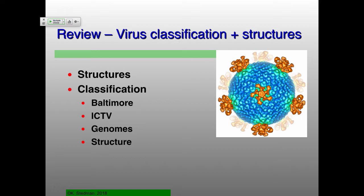Genomes are probably a much better way to classify viruses. The problem with the genomes of viruses is that they don't share a common gene, so it's not like you have for cellular life where everything shares a small subunit RNA gene. It's a case of, okay, we need to try and figure out something that all viruses have.